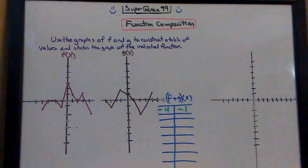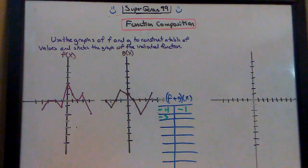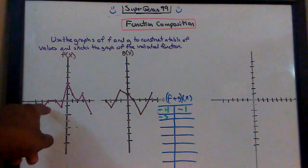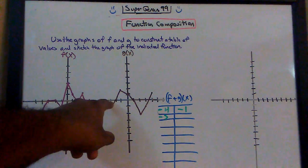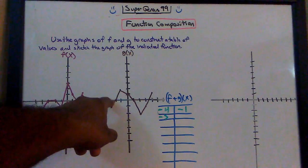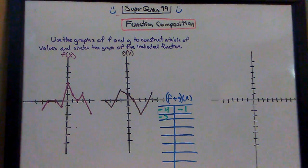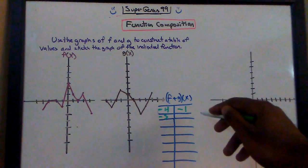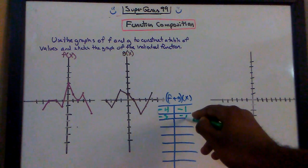How about the next one? f of negative 3. f of negative 3 is 0, and g of negative 3 is negative 1. So what is 0 plus negative 1? That's negative 1.